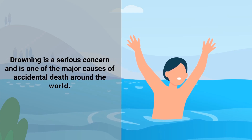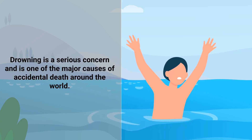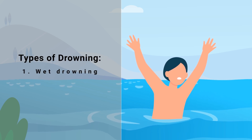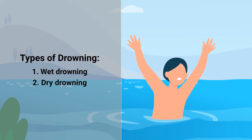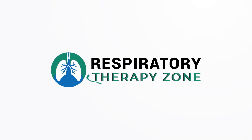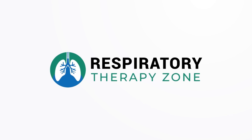Drowning is a serious concern and is one of the major causes of accidental death around the world. With that said, not everyone is aware that there are two distinct types of drowning: wet drowning and dry drowning. But what's the difference? Keep watching if you want to find out.